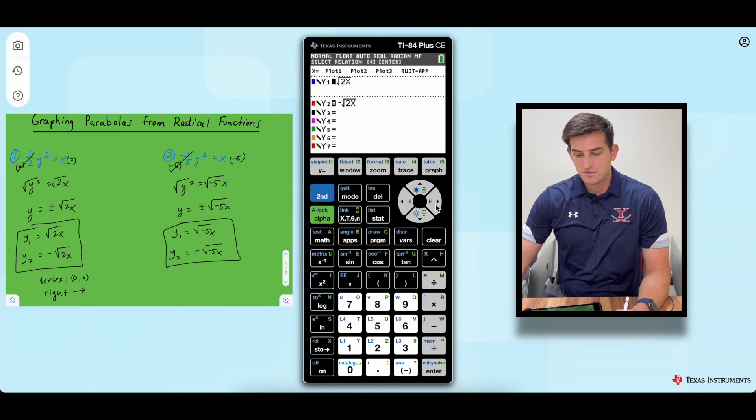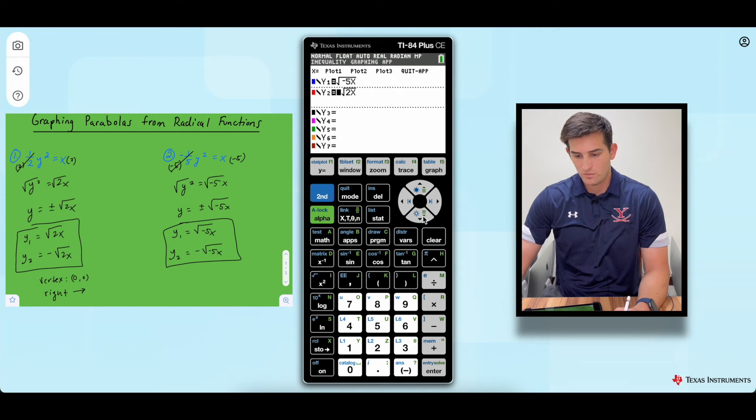So let's go back to y equals and I'm going to leave my square root in there and just kind of type over it. So negative five x for y1 and negative square root of negative five x for number two. And we hit graph.